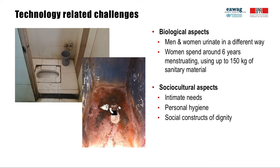We all want to have toilets which are clean, safe and healthy to use, accessible, comfortable and assured for privacy. In order to plan for appropriate gender-friendly sanitation facilities or to improve conditions of existing toilets which are far away from acceptable, like shown in those pictures, the following aspects must also be understood: intimate needs, personal hygiene — like are you a washer or a wiper — the social construction of dignity, like the perceptions of purity and impureness.